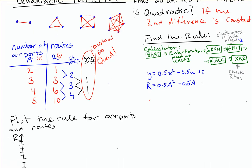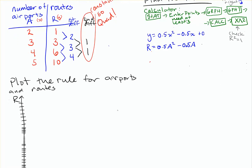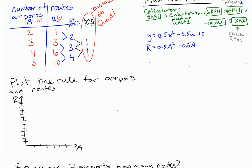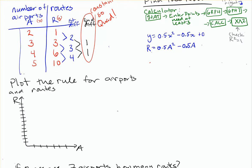The next thing that's going to ask us to do is actually plot this. So again, when we're plotting, we're just going to go back to the original table: the number of airports and the number of routes.